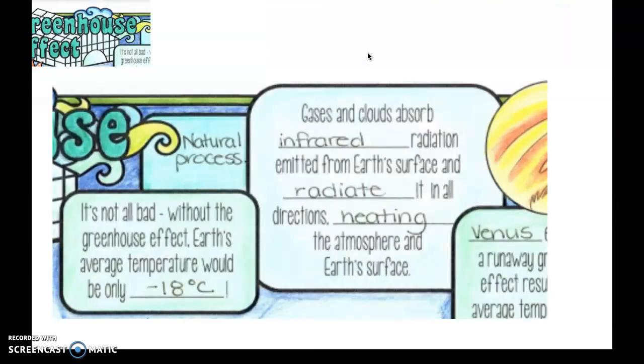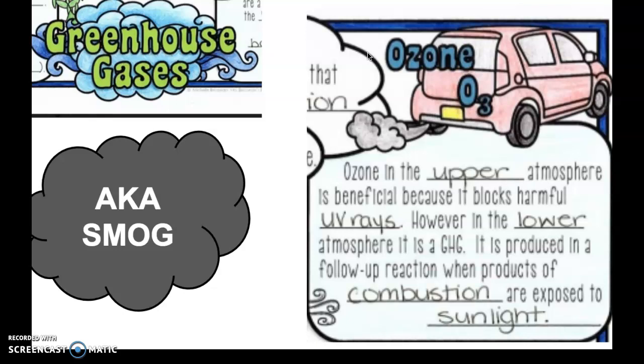Lastly, with our greenhouse gases, is ozone, but this is the bad ozone, aka smog, or O3. Ozone in the upper atmosphere or the stratosphere is beneficial because it blocks UV rays—that's the ozone that CFCs destroy. However, ozone in our lower atmosphere is considered a greenhouse gas. That smog is produced in a follow-up reaction when products of combustion are exposed to sunlight. Our oxygen that's being released in combustion reaction, as it hits the sunlight and the electrons excite, it can become O3, and then that is what we consider smog when it's found in our troposphere.